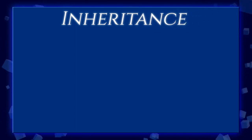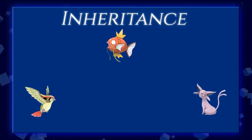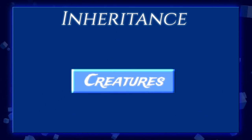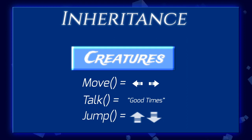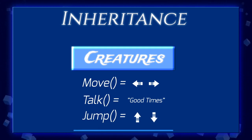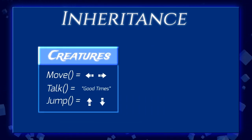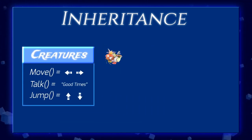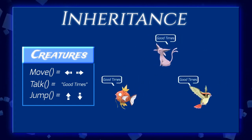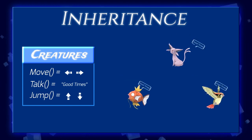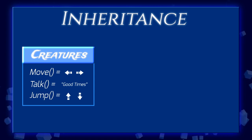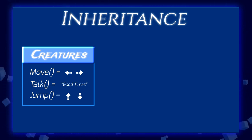To get this done in a programming context, we'll have to use inheritance. In our example, all three friends are going to be what we call creatures, and the commands we want to send them are move, talk, and jump — something all three have in common. If we place the creature definition script on all three, they'll have the same behavior, which is weird because a bird doesn't move the same way as a fish.